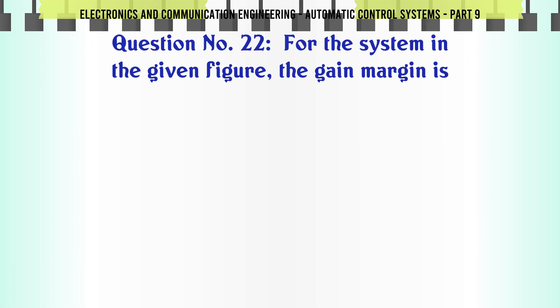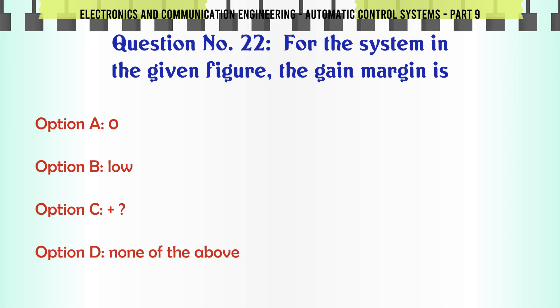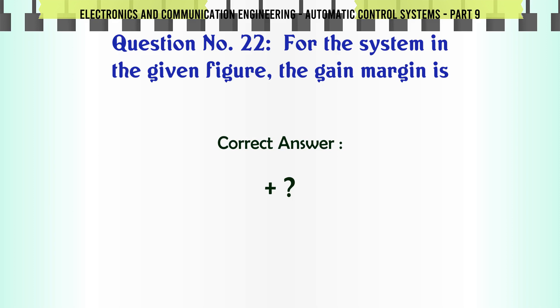For the system in the given figure, the gain margin is: A. 0, B. Below, C. (not given), D. None of the above. The correct answer is stated (figure-dependent).